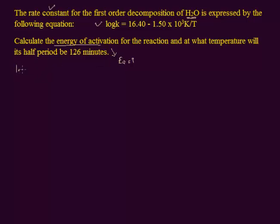The Arrhenius equation is: log K, where K is the rate constant, is equal to log A, where A is the pre-exponential factor, also known as the frequency factor. It indicates the frequency of collisions between colliding particles, minus Ea — the energy of activation — divided by 2.303 R, where R is the gas constant, and T is the temperature.